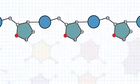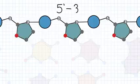The carbon numbering is key to describing the directionality of the DNA strand, 5' to 3'.